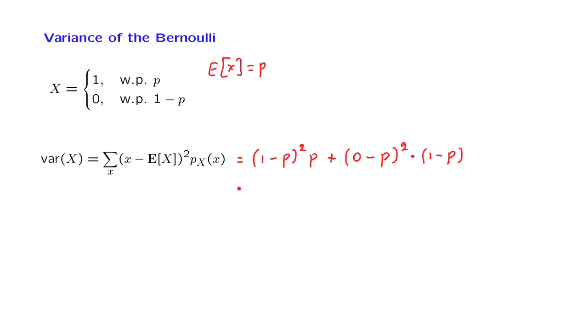And now we carry out some algebra. We expand the square here: 1 minus 2P plus P squared. After we multiply with this factor of P, we obtain P minus 2P squared plus P to the third. Then from here, we have P squared times 1 minus P, giving us minus P cubed. Then this term cancels with that term. P squared minus 2P squared leaves us with P minus P squared, which we factor as P times (1 minus P).